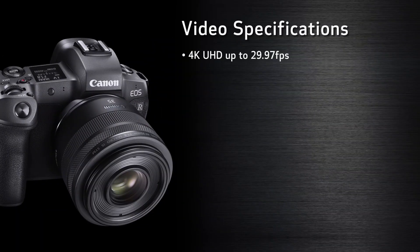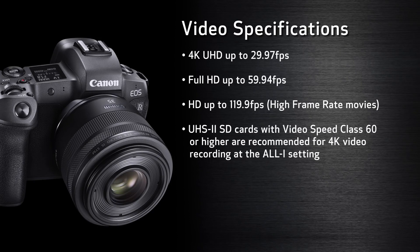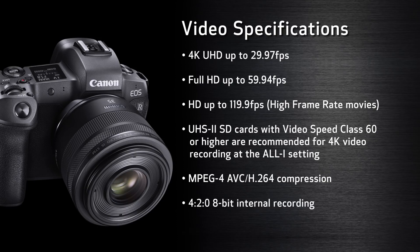The EOS R records 4K UHD up to 29.97 frames per second, full HD up to 59.94 frames per second, and HD up to 119 frames per second for high frame rate movies. All internal recordings are to SD cards including UHS-II and they use the MP4 container format with MPEG-4 AVC H.264 compression. The internal recordings are 4:2:0 8-bit and employ the Rec.709 color space.